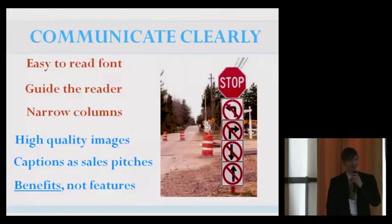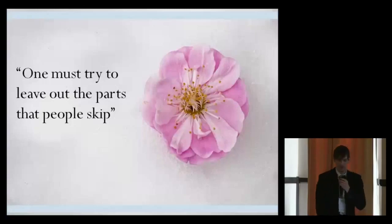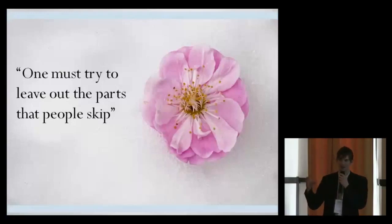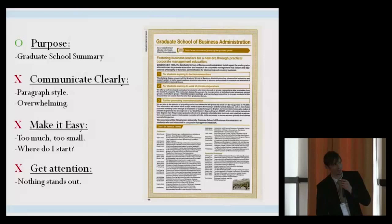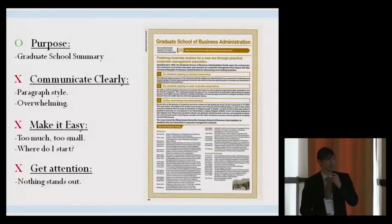Communicating clearly: making it easy to read, guiding the reader so they know where to look rather than having a lot of text. Narrow columns, like a newspaper, are easy to read. Images, captions, and conveying benefits to them — not features. What can they get out of it? There's a quote I like: 'You must try to leave out the parts that people skip.' If you think you're doing good by adding a paragraph into your design, chances are people are going to read right over it. Looking at this Ritsumeikan pamphlet — it's very text heavy. It does have a purpose and outlines the graduate school, but it uses paragraph style, it's a bit overwhelming, you don't know where to start reading, it's a little small, and nothing in particular stands out.